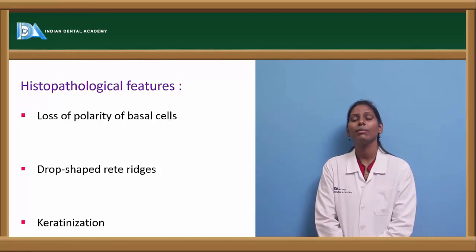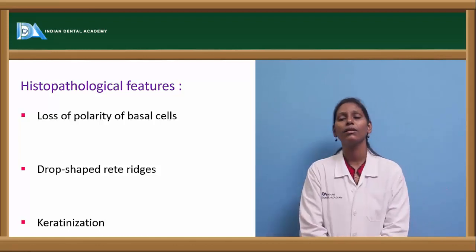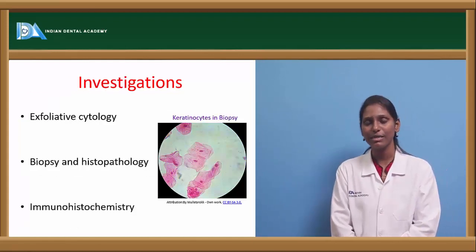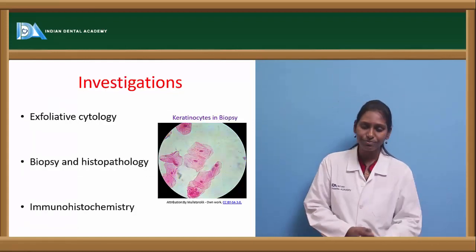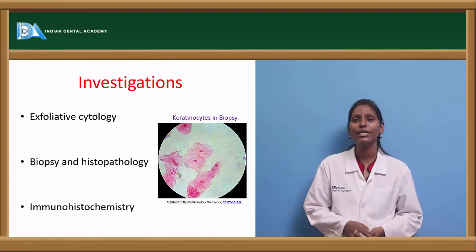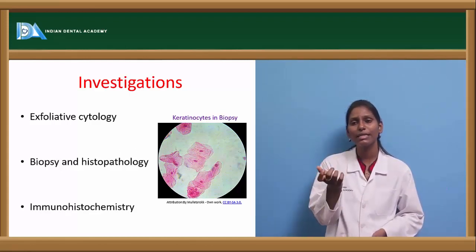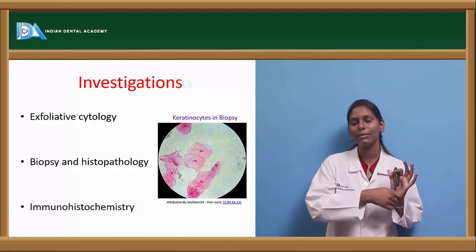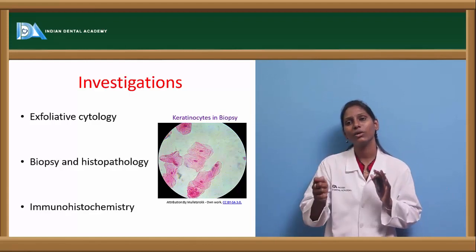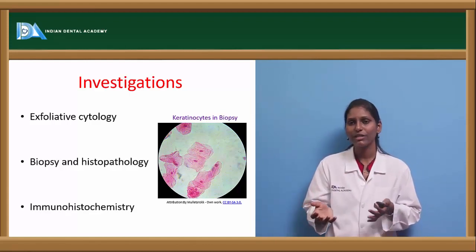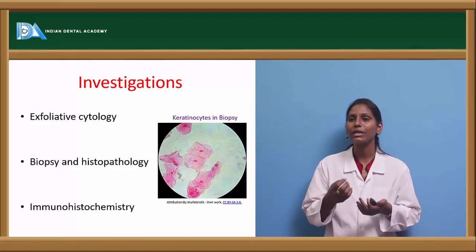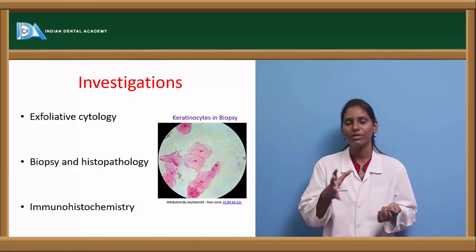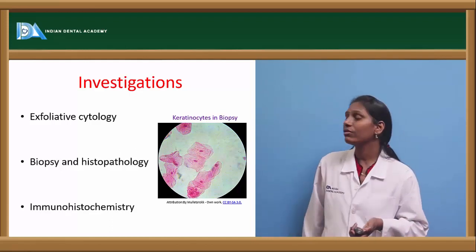Coming to histopathological features: there will be loss of polarity of basal cells and rod-shaped rete pegs, deep extension of rete ridges, and keratinization can be seen. For investigations, exfoliative cytology with the help of brush biopsy — oral CDX brush biopsy — we can do a transepithelial biopsy: scraping of surface cells and checking under the microscope, where you can see acanthosis and deepening of the cells.